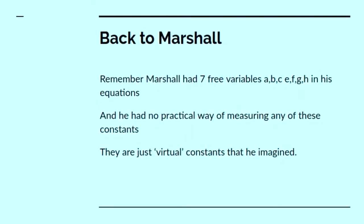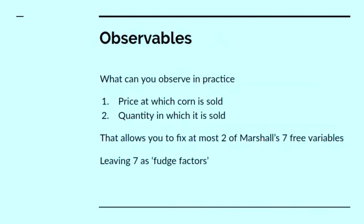Now, let's go back to Marshall. Marshall's got his seven free variables, but he has no practical way of measuring any of these constants. They're just virtual constants that he's imagined. What can you observe in practice? All you can observe is that at the Winchester market, so many tonnes of corn were sold, and that it was sold for, say, three shillings and sixpence a bushel. This allows you to fix at most two of seven free variables.